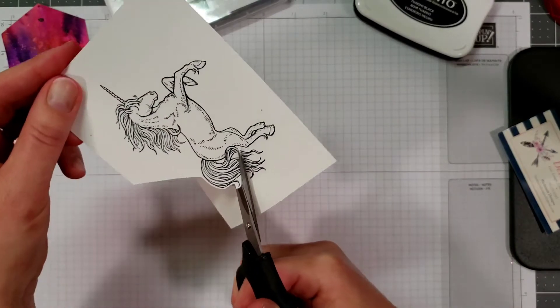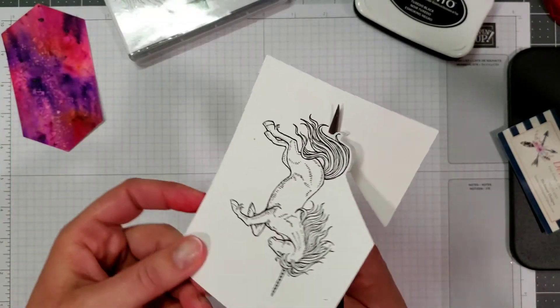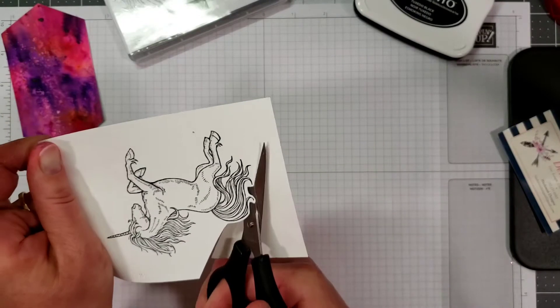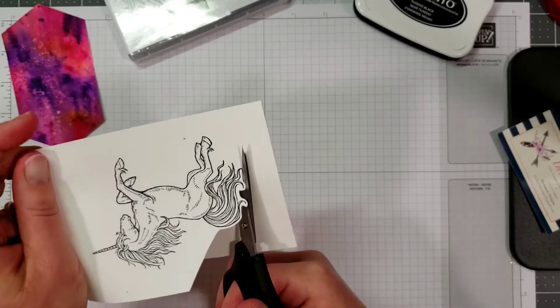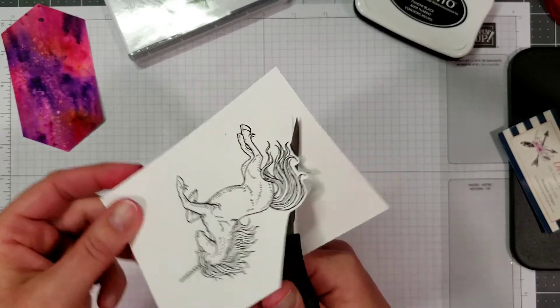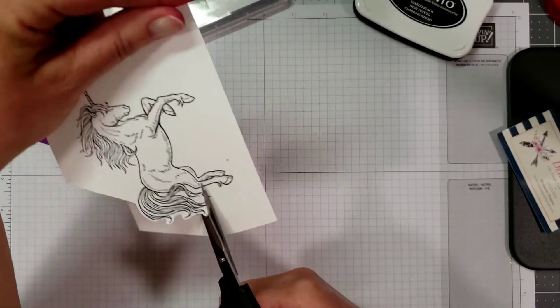You can get as close to the lines as you want, you don't have to be super fussy about it. Just turn your paper when you want it to go around the corners.